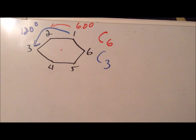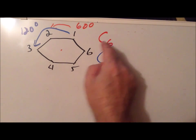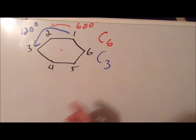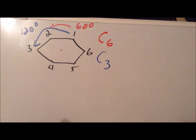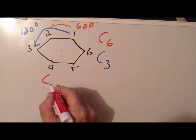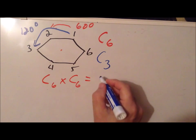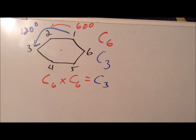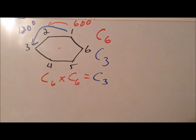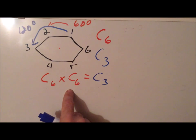Continuing on this theme, we notice that if we do two C6 rotations in a row, that has the same effect as doing a single C3 operation. We can write this as C6 times C6 equals C3. This idea that two or more operations can combine to have the equivalent effect of a third operation will become increasingly important. Both doing C6 followed by C6, or doing C3 all at once, are symmetry operations of the regular hexagon.